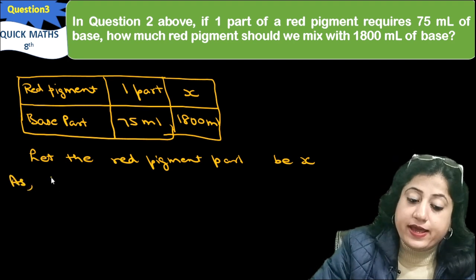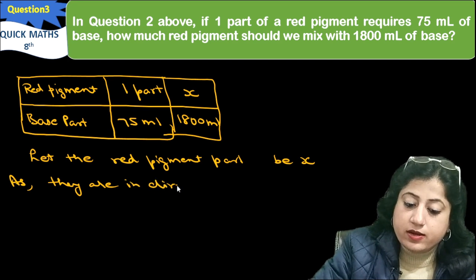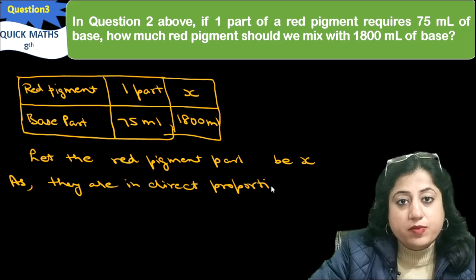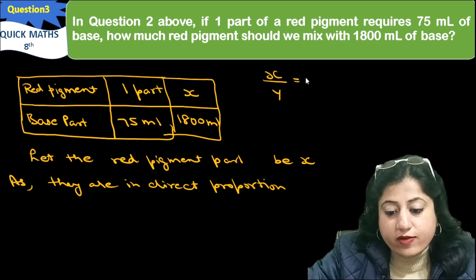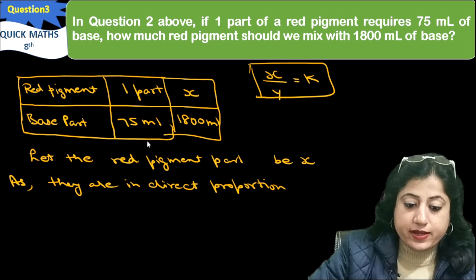As they are in direct proportion, in the second question we have also written this. What do we say? That x by y equals to k. Direct proportion means that x by y will be constant in each case.